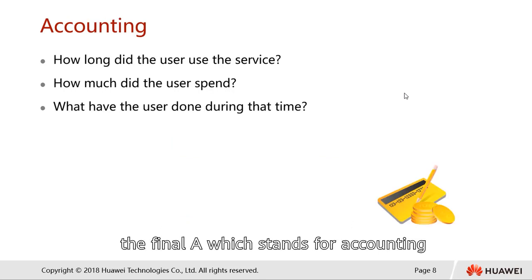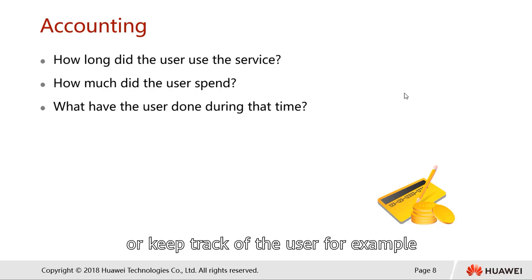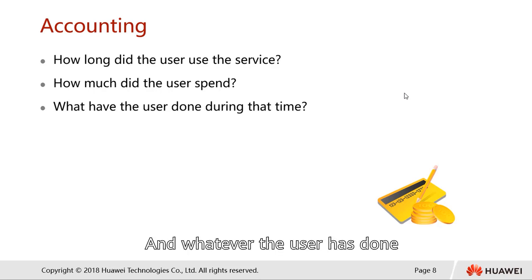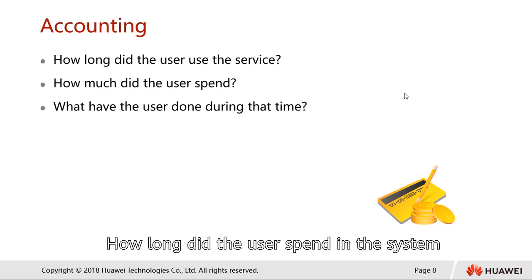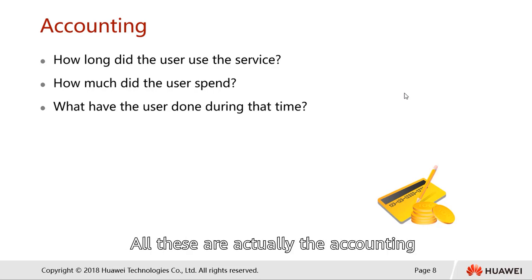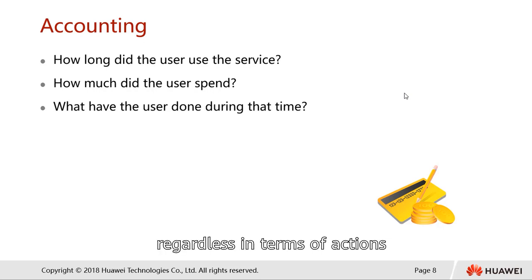The final A stands for Accounting. Accounting has to do with recording or keeping track of user activity. For example, when the user logs into the system using their credential, that is authentication. What the user can do inside the system is authorization. And whatever the user has done — how long they spent in the system, what they performed — all this falls under accounting. Accounting means the record of activity, both in terms of actions as well as the period of time.